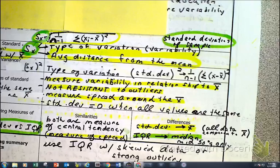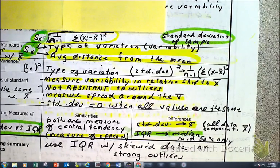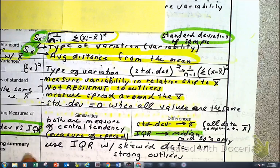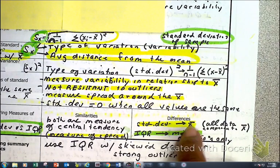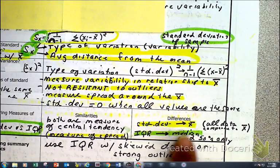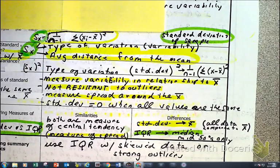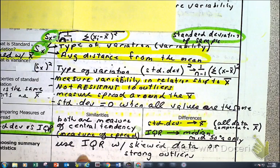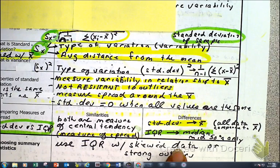One last thing in the notes before we do problem 98: choosing the summary statistic. You use standard deviation with the mean, and you use the IQR with the median. Also, you use IQR with skewed data or when you have a strong outlier — because the IQR is resistant to outliers and extreme values. The skewness would be the extreme values. So don't forget which two go together.